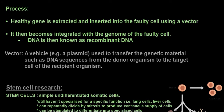The process used: a healthy gene is extracted and inserted into the faulty cell using a vector. A vector is a vehicle — for example, a plasmid. Remember we worked with plasmids when we were doing insulin. The vehicle is used to transfer genetic materials such as DNA sequences from the donor organism to the target cell of the recipient organism. Basically, the vector acts as a taxi.